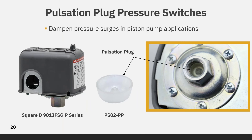The pulsation plug slows the flow of fluid to the diaphragm of the pressure switch to reduce the surge rate. The most common application for the switch with the pulsation plug is for piston pumps. Without the plug, the spike in pressure would cause the contacts to open, shutting off the power to the pump only to be turned right back on. The pulsation plug can be easily installed into any brand of switch with a quarter inch FPT pressure connection.